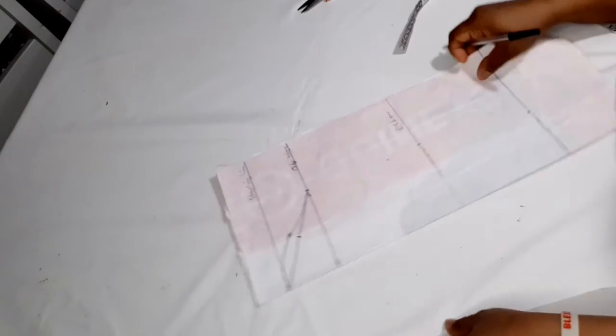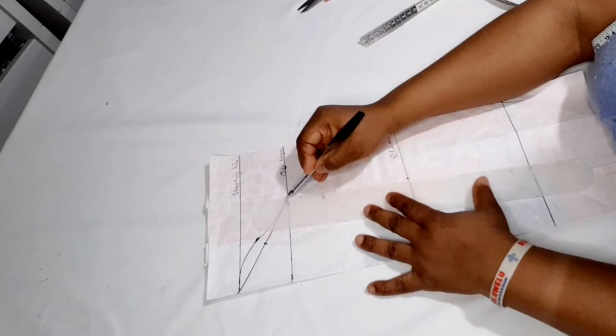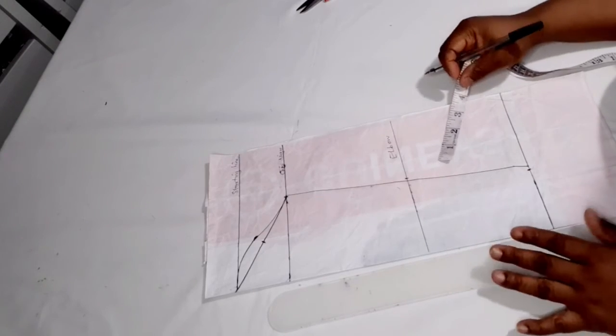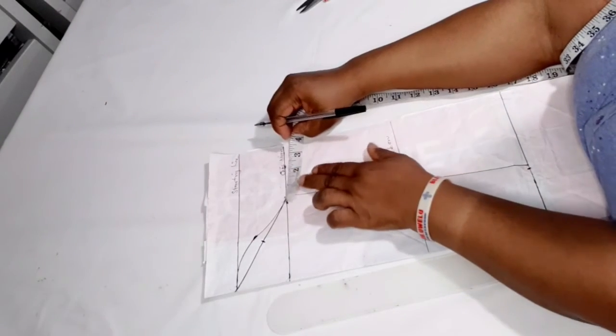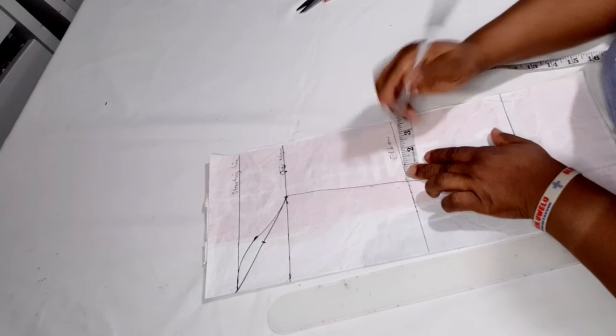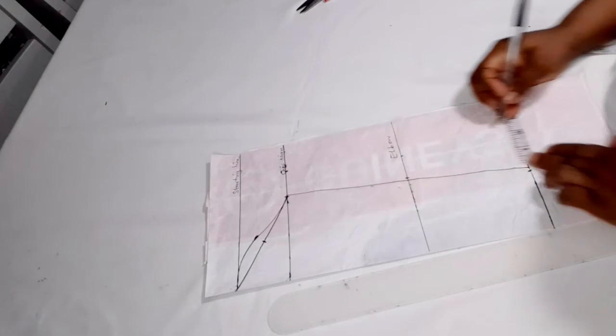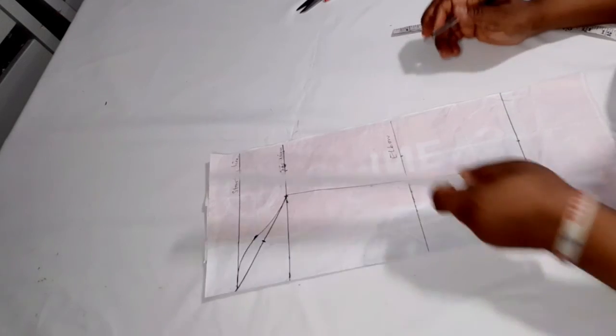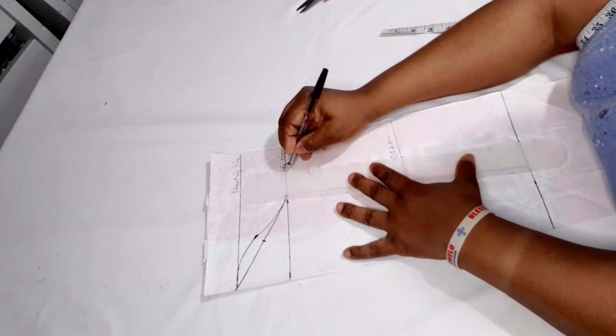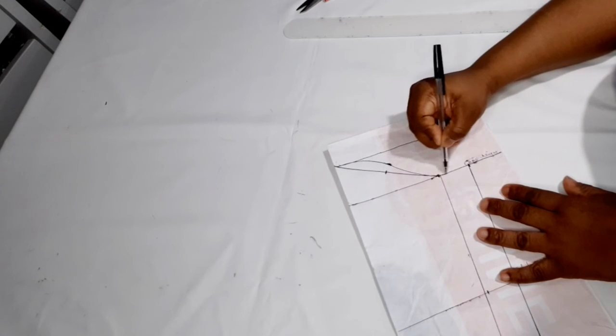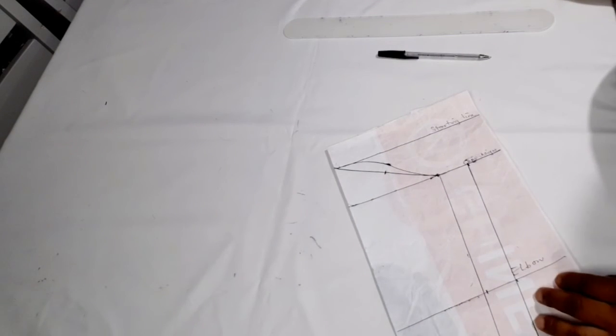Now I'm going to connect it. I'm going to go ahead and add my allowance, add about one and a half inch allowance, and the next thing is to cut it out.